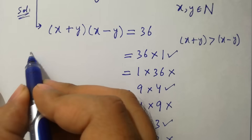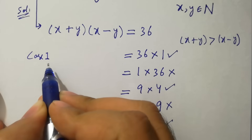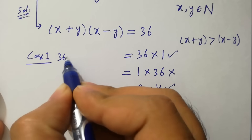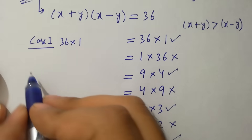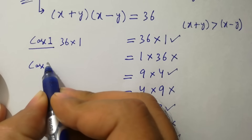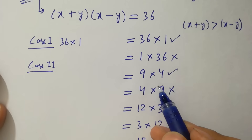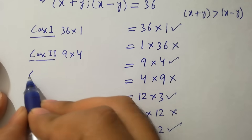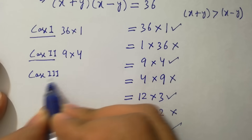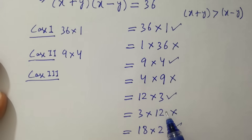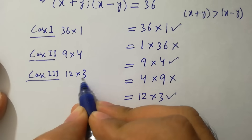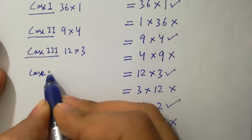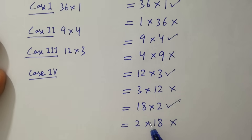So the possible cases are: Case 1 is 36×1, Case 2 is 9×4, Case 3 is 12×3, and Case 4 is 18×2.